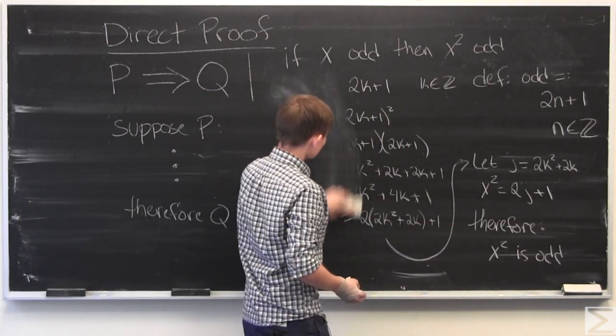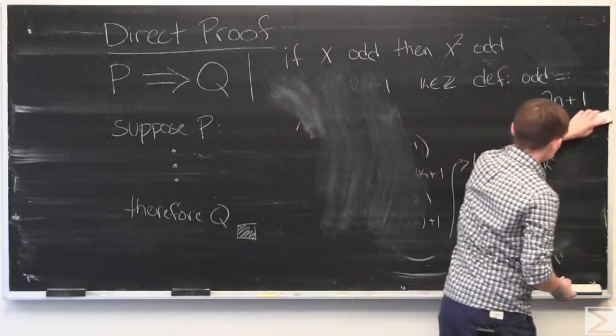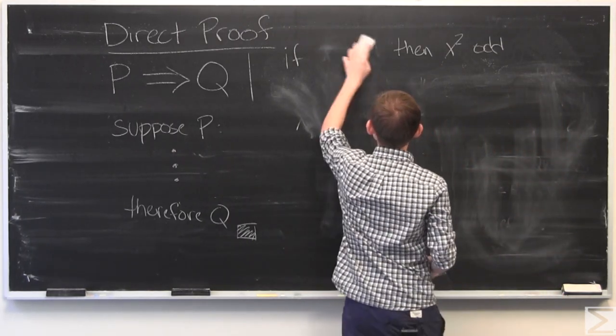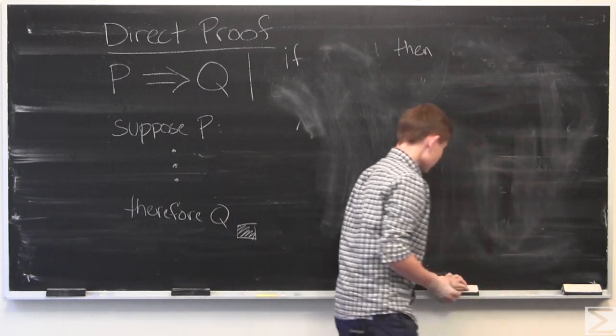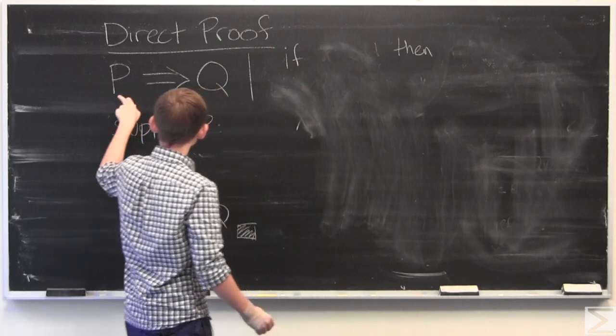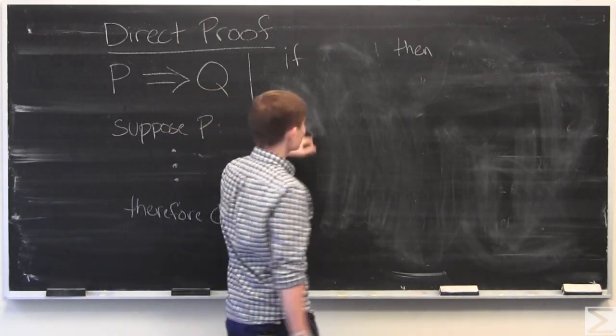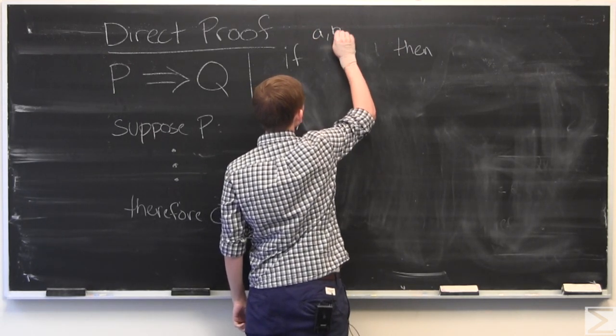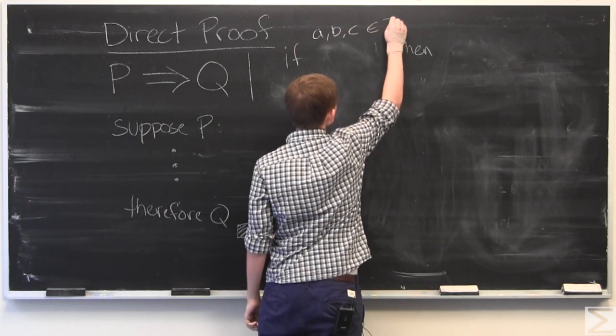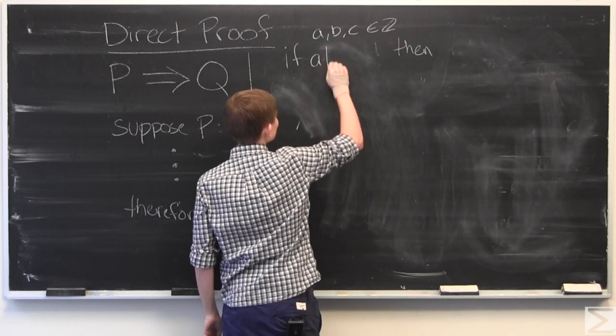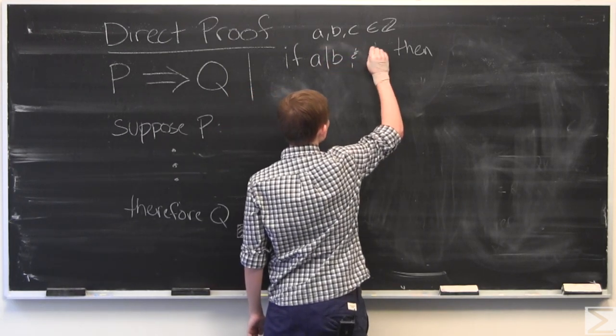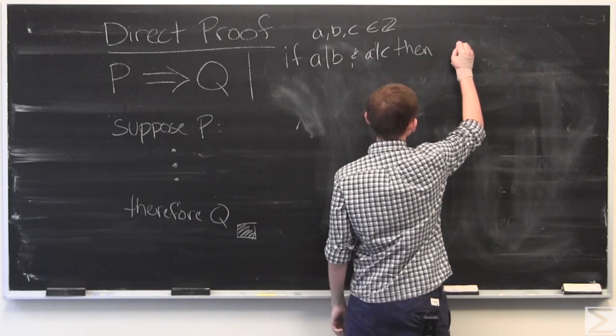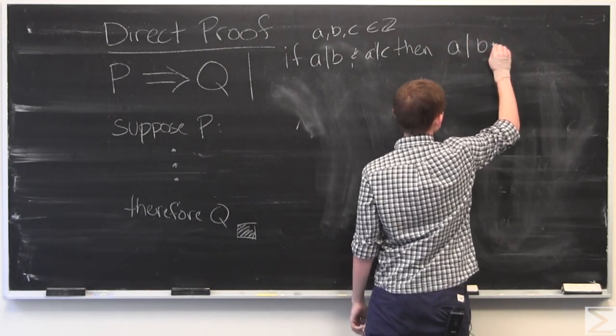And in case you wanted one more example, we can do one. Now let's say for our P, if we have integers A, B, and C, and we'll say A divides B, and A divides C. And we are going to show that this implies that A divides B plus C.